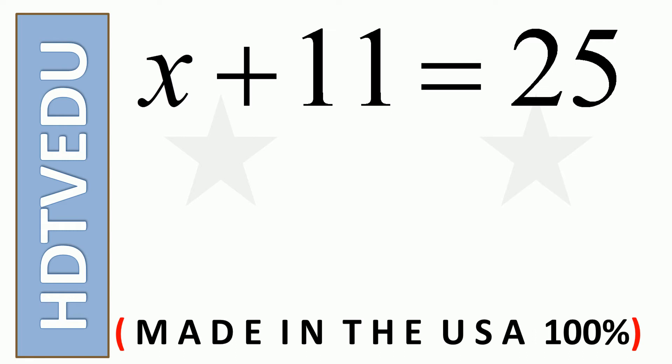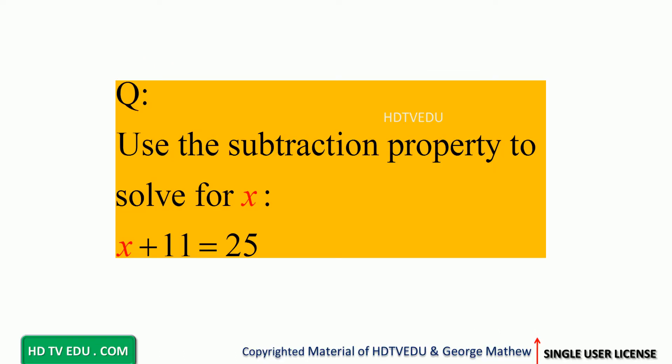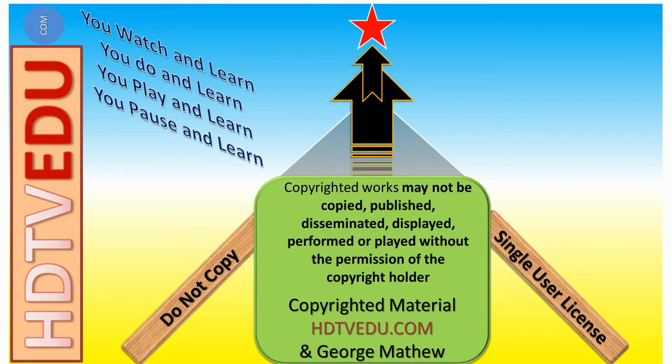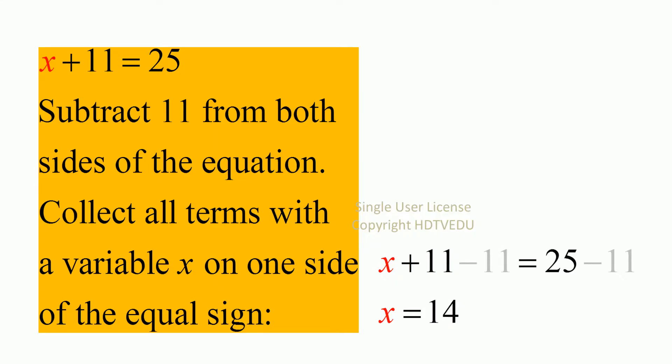x plus 11 is equal to 25. Solve for x. Use the subtraction property to solve for x. We have the equation x plus 11 equals 25. Subtract 11 from both sides.